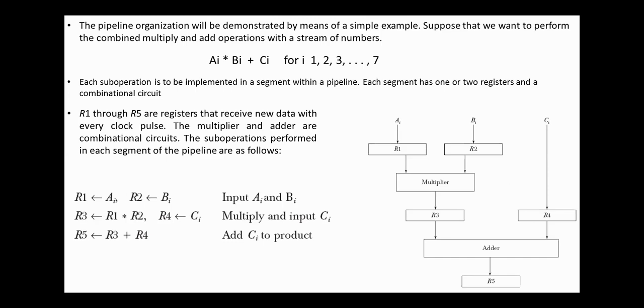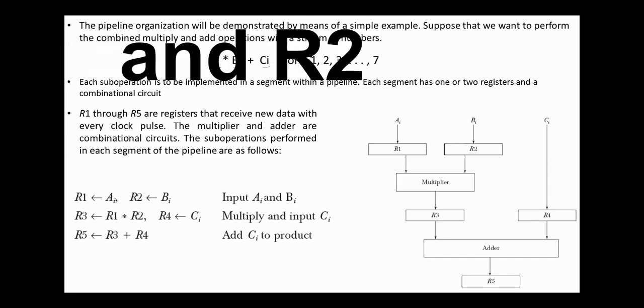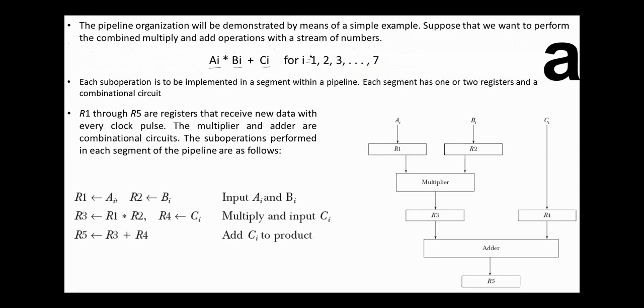Suppose that we want to perform the combined multiply and add operations with a stream of numbers: AI multiplied by BI plus CI for I equals 1, 2, 3, 7 and even more. Each sub-operation is implemented in a segment within a pipeline. We have five registers. Registers R1 are used to receive the new data with every clock pulse, and the multiplier and the adder are combination logic circuits to perform the multiply and add operations.